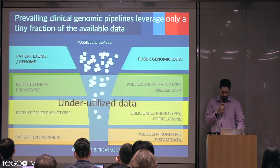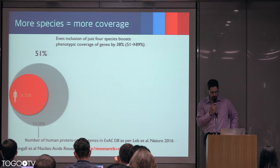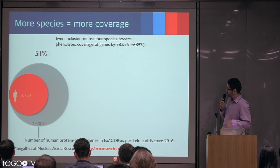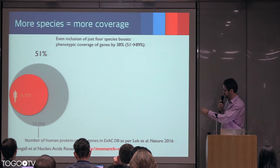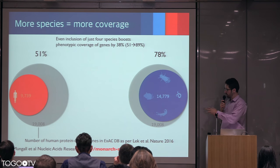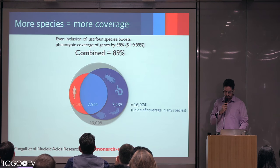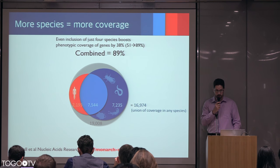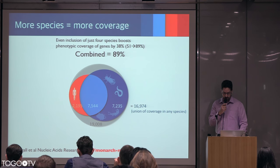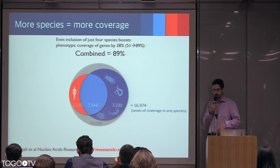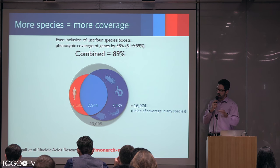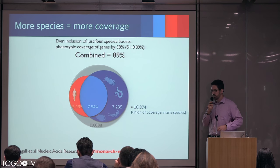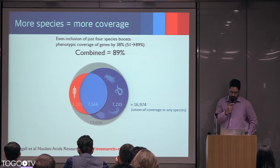If you look at phenotypic coverage by genes, on the human side about 9,000 genes are covered. But if you look at the model organism data, the coverage is much larger, and if you put them together you end up with about 90% coverage of genes with phenotypic data. This really screams out for closing the gap between what is currently done in clinical practice and the immense amount of work done in the model organism area with respect to describing phenotypes and capturing genotype-phenotype associations.